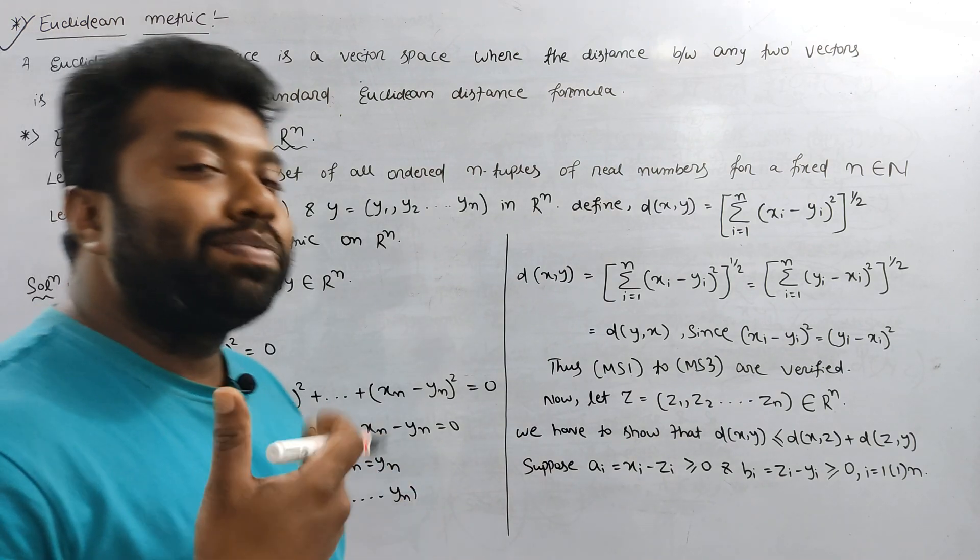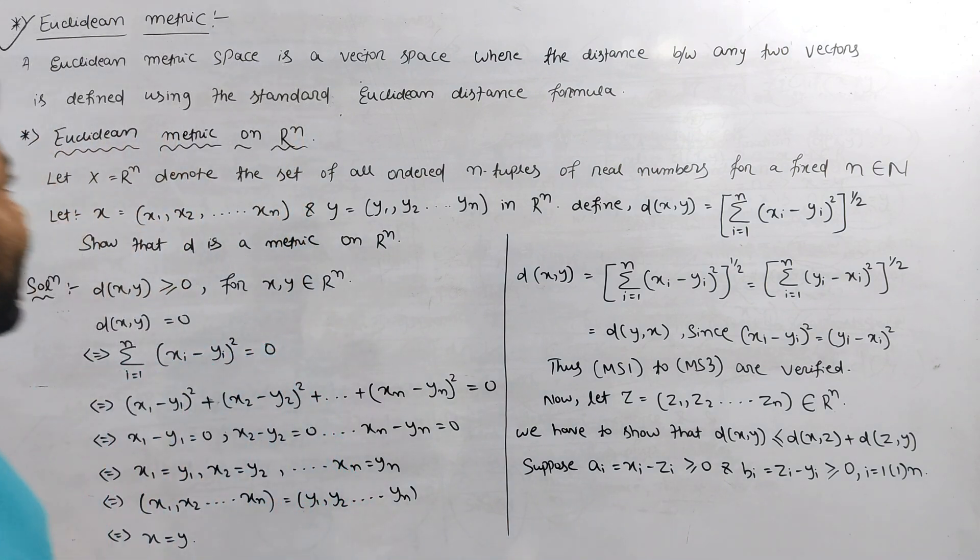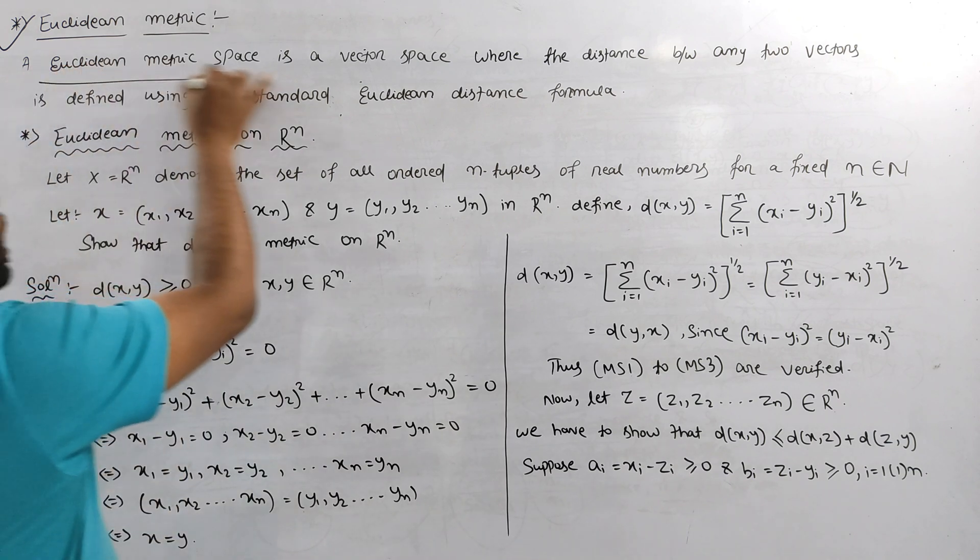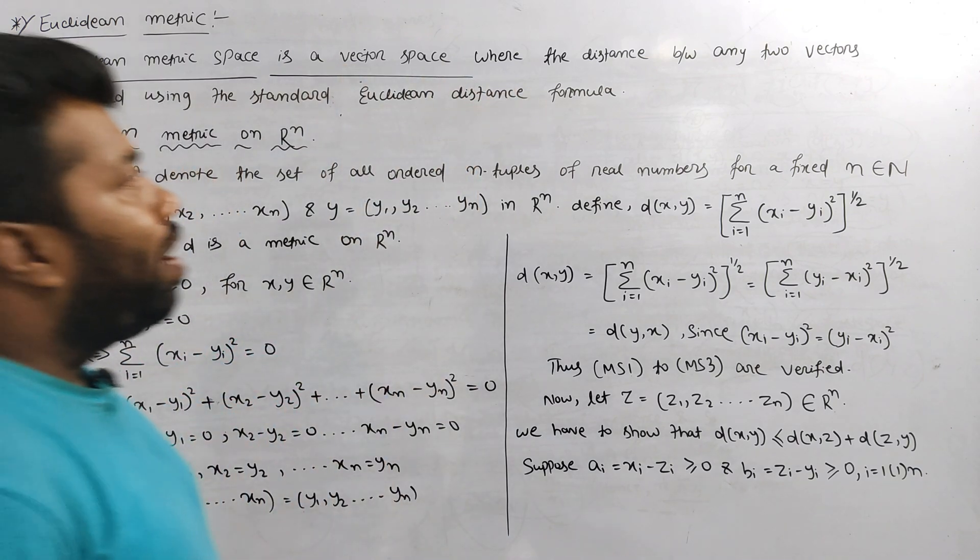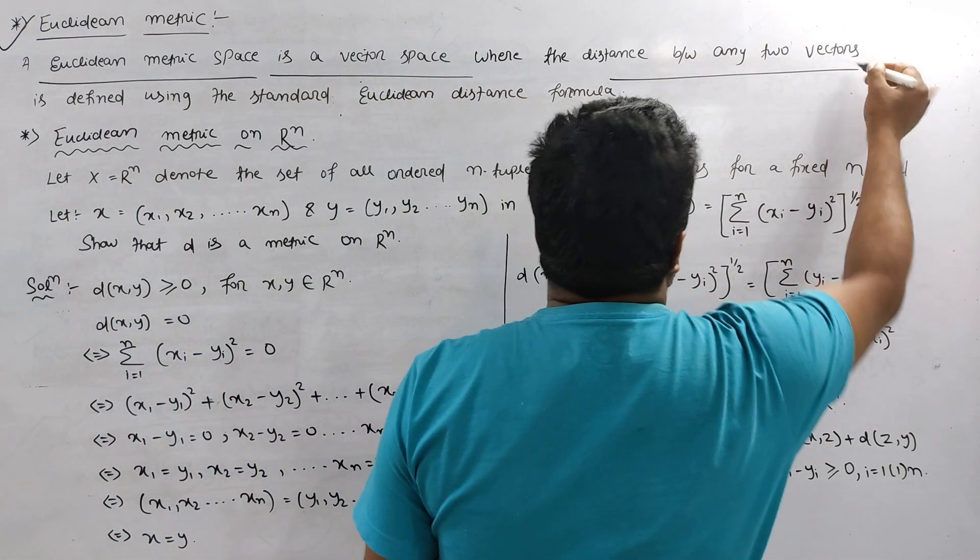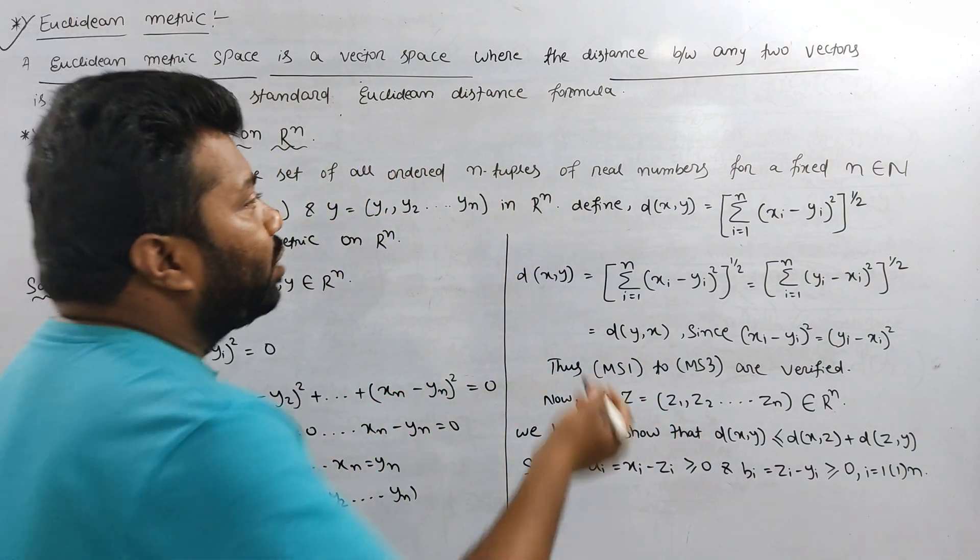I am going to prove it in a good matrix space. This Euclidean Metrics space is a vector space where the distance between any two vectors is defined.